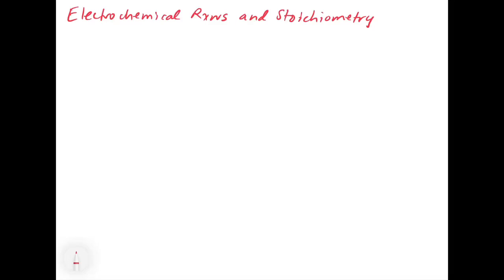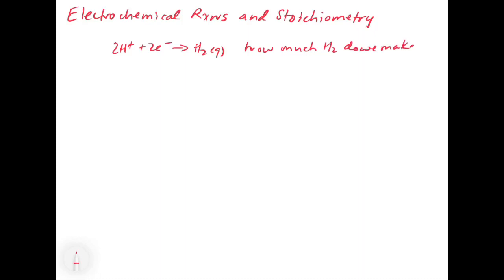In the final video for chapter 19, we're going to take a look at how we can do stoichiometry from electrochemical reactions. For example, let's say that we're running the reaction 2H⁺ + 2e⁻ → H₂ gas, and we just want to know how much H₂ we make. We have to think about how we can figure out the amount of products we'll make from an electrochemical reaction.